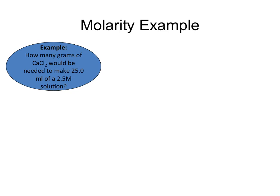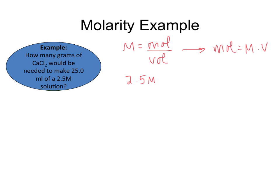In our last example, we're trying to find out how many grams of calcium chloride would be needed to make 25 milliliters of a 2.5 molar solution. We are going to have to modify our equation: molarity is equal to moles over volume. Using the triangle or simple manipulation, we take the molarity and the volume and multiply them together. So the molarity is 2.5 M, which is moles over liters, multiplied by the volume of 0.025 liters. The liters cancel, giving us 0.0625 moles.